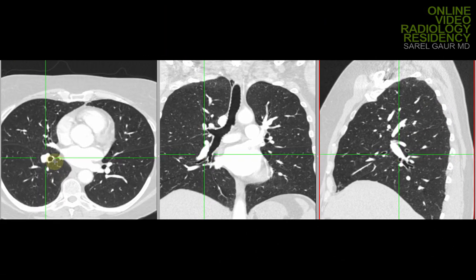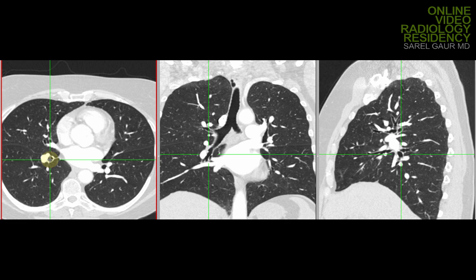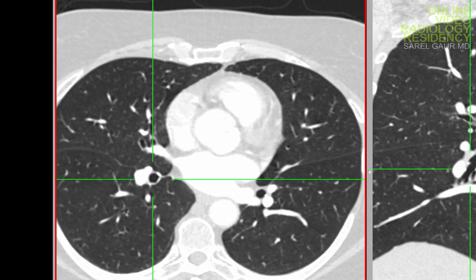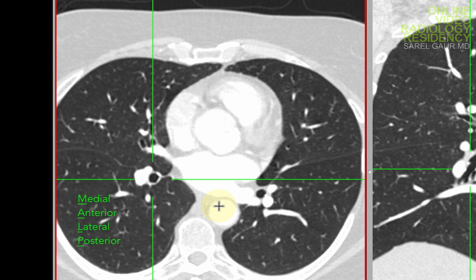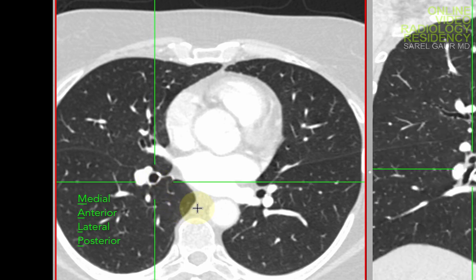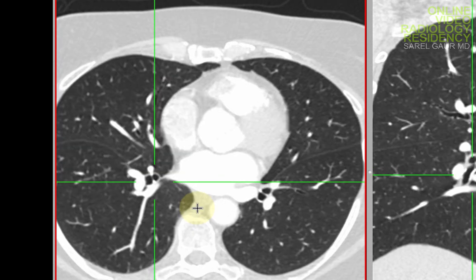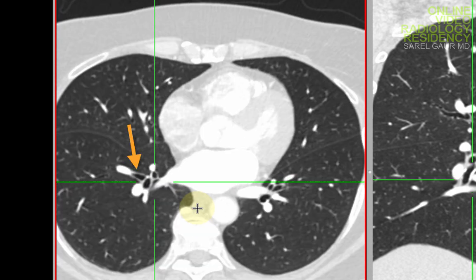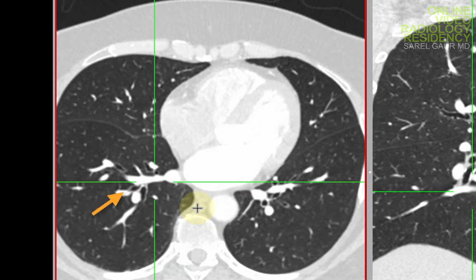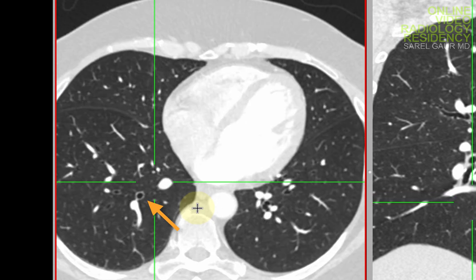If I keep coming down, at this point, this part of the bronchus is known as the truncus basalis. It gives rise to four basilar segments of the right lower lobe in a counterclockwise fashion. The four segments are medial, anterior, lateral, and posterior. If I put my cursor here and watch, you can see the medial segment giving rise there, the anterior segment, the lateral segment, and the posterior segment.